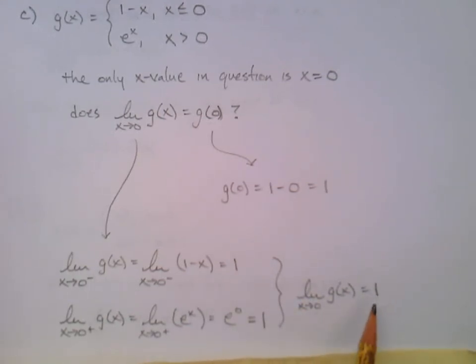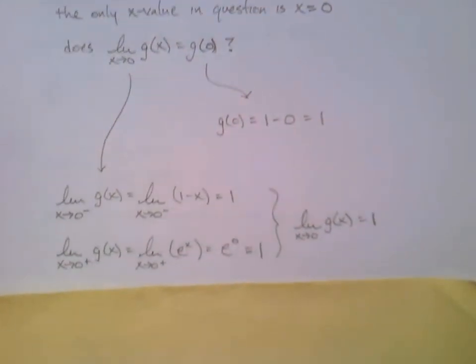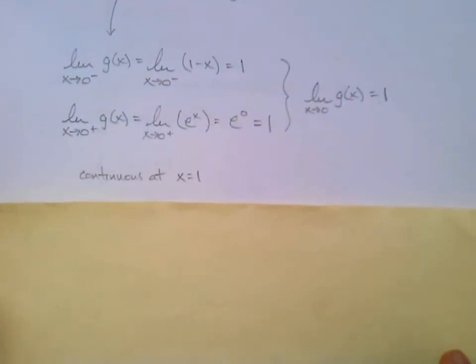And even more, my limit equals one, and a moment ago we got g of zero equals one. And so it turns out this function is continuous at one - even though it's piecewise and there seems to be this transition happening and possibly a jump going on there at zero, turns out they line up perfectly.